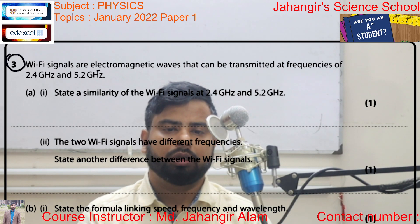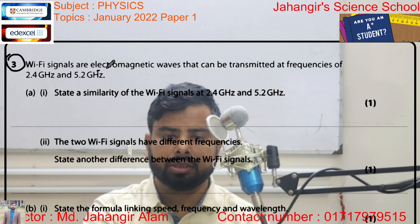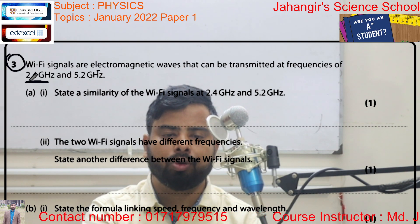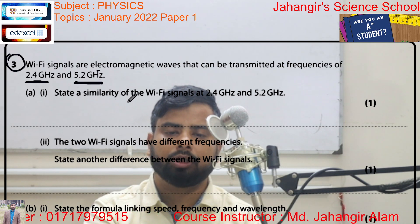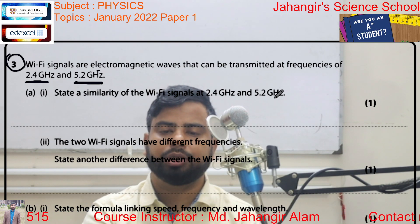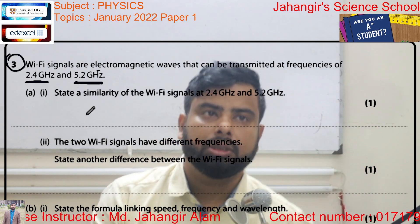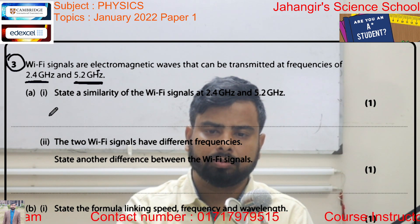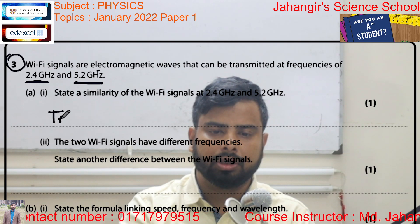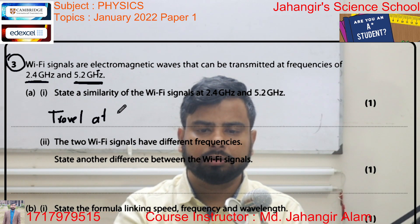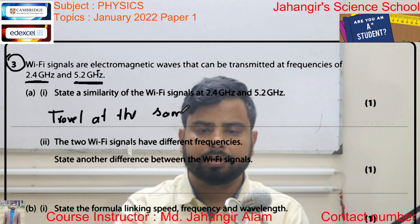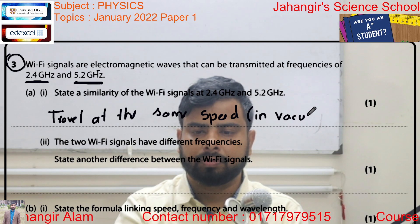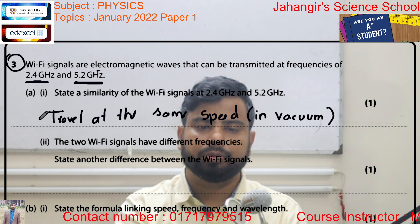Question number 3. The Wi-Fi signals are electromagnetic waves that can be transmitted at a frequency of 2.4 gigahertz and 5.2 gigahertz. State the similarity of the Wi-Fi signal at 2.4 gigahertz and 5.2 gigahertz. Remember, all electromagnetic waves are transverse waves. They travel at the same speed in vacuum.